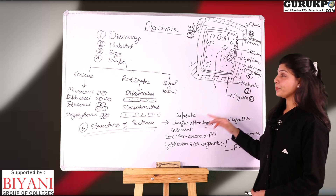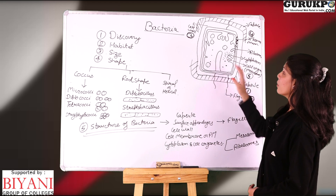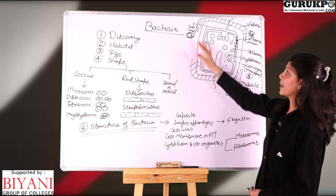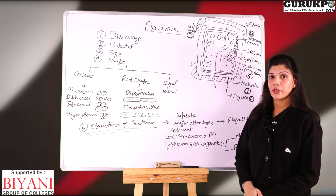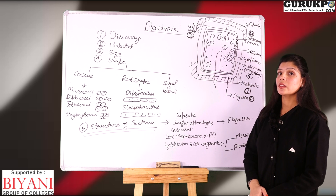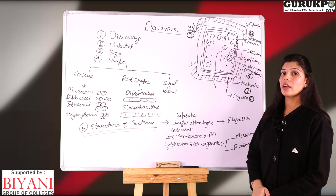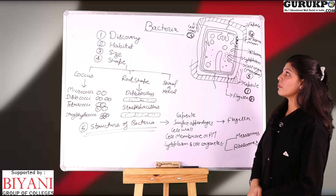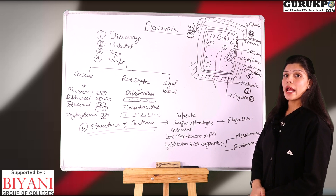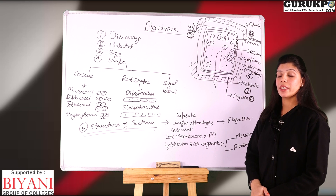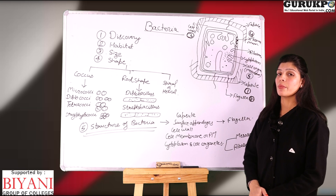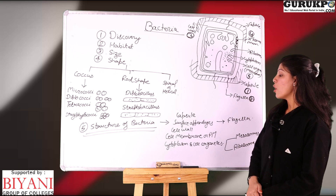Third is the cell wall. Cell wall is made up of murein and peptidoglycan. The three main components of the cell wall are N-acetyl muramic acid, N-acetyl glucosamine, and 4-D amino acids.